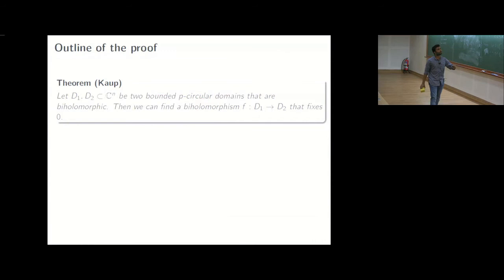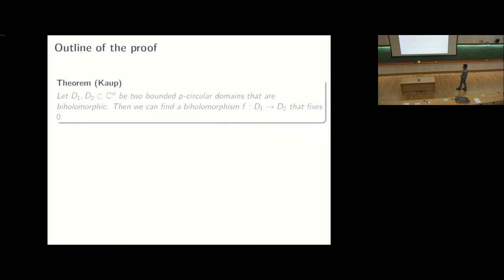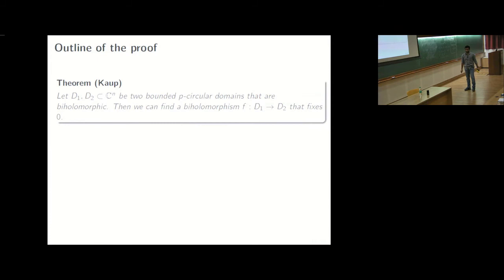So to do that, I would like to give an outline of the proof and maybe I can do justice to the proof as well. This is a 1970 result in a German paper by Kopp, where he proves that if we have two p circular domains, if you have a biholomorphic mapping from d1 to d2, then there also exists another biholomorphism, or maybe not another, but which fixes the origin. So all through this talk, whenever a complete circular or a complete p circular was being mentioned, it was with respect to the origin. So we can find biholomorphism which fixes zero.